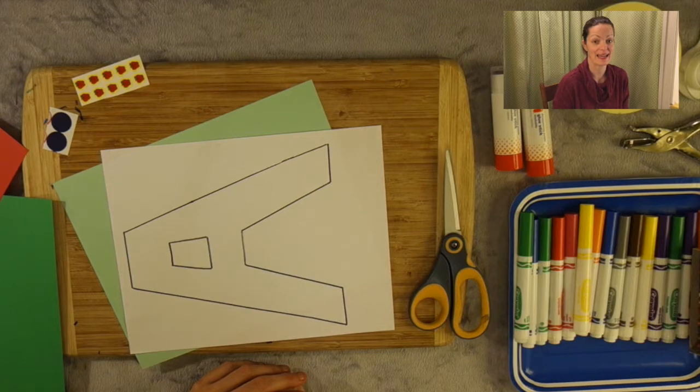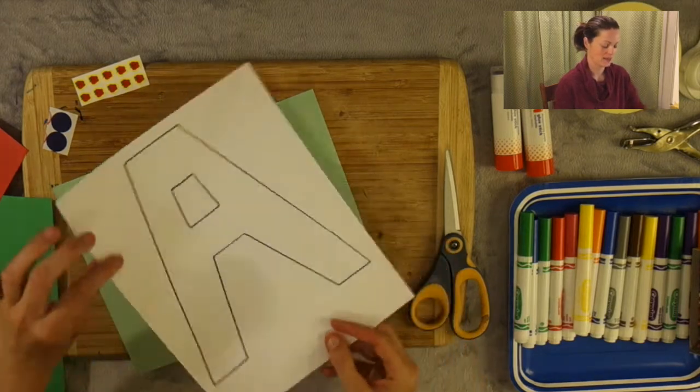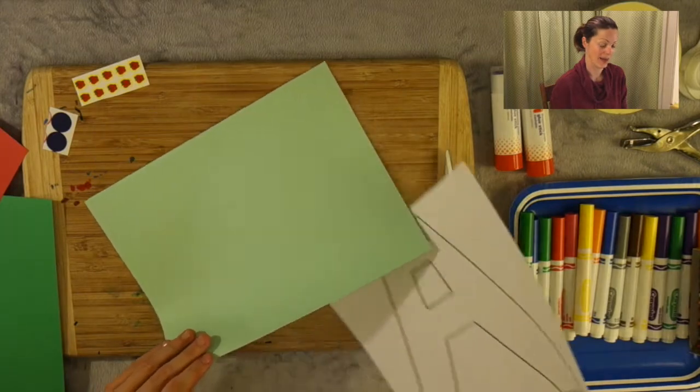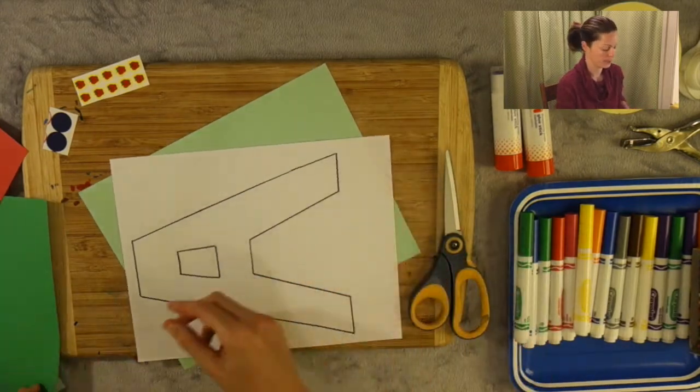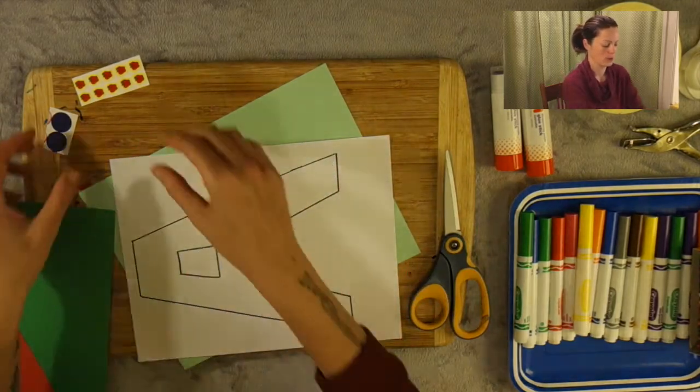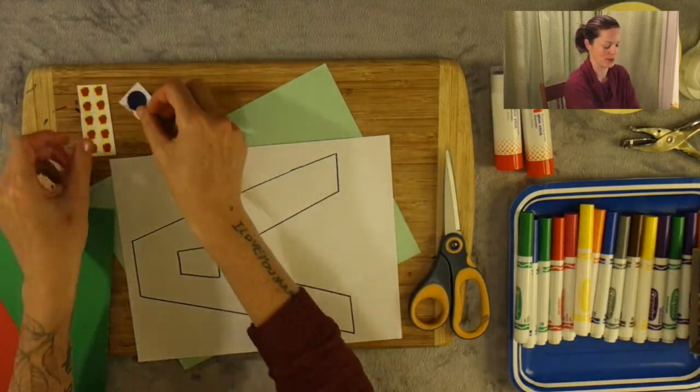In front of me I have my A template, capital A, as well as a piece of back paper (it could be any color), a piece of green paper, red paper, some stickers, and some apple stickers as well.